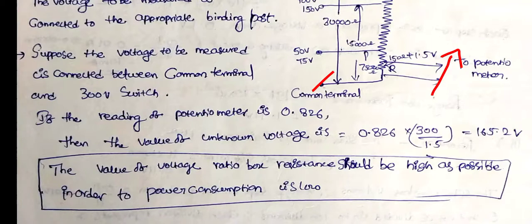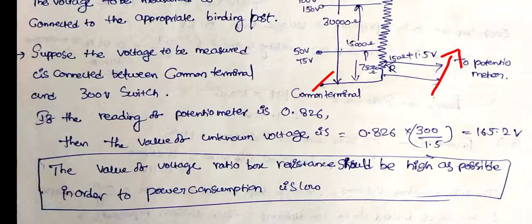The resistance of the voltage ratio box should be as high as possible to minimize power consumption and prevent damage to the potentiometer. Using a high resistance ratio box reduces current flow and protects the potentiometer. In the next video, we will discuss AC potentiometers.